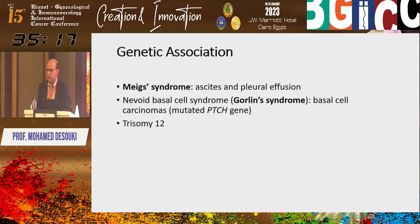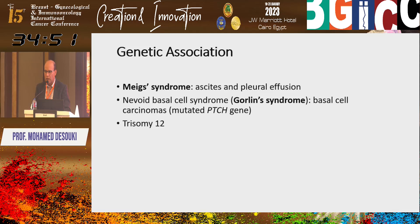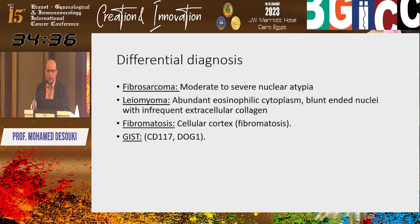For board exams, very common questions involve genetic associations. Remember Meigs syndrome and Gorlin's syndrome. In Meigs syndrome there is ascites and pleural effusion. In Gorlin's syndrome — also called nevoid basal cell syndrome — you have basal cell carcinomas and the mutated PTCH gene. Trisomy 12 is also a feature of fibroma. This slide has a lot of potential exam questions.